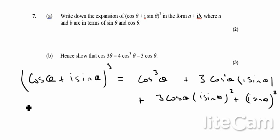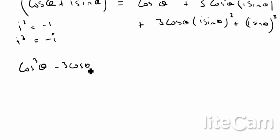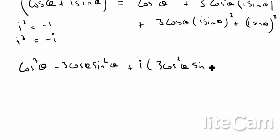All we need to remember is that i² = -1 and i³ = -i, and then that should be enough to work out the rest of the expansion. If we do that, we should end up with cos³θ - 3cosθ sin²θ + i(3cos²θ sinθ - sin³θ).